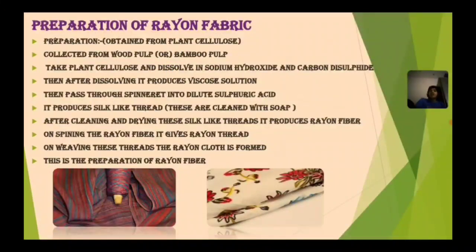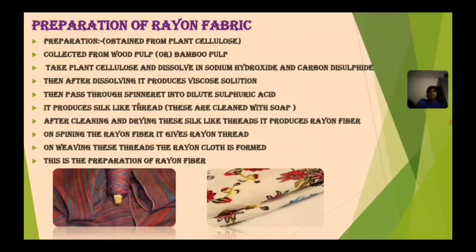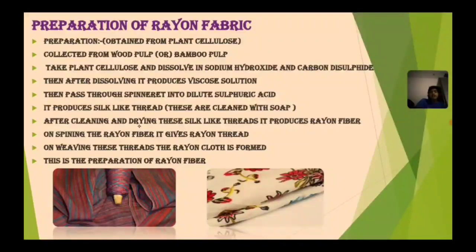Preparation of rayon fabric: it is obtained from plant cellulose, collected from wood pulp or bamboo pulp. Take plant cellulose and dissolve in sodium hydroxide and carbon disulfide. After dissolving, it produces a viscous solution. Pass this through a spinneret into dilute sulfuric acid, which produces silk-like threads. These are cleaned with soap, and after cleaning and drying, these silk-like threads produce rayon fiber. On spinning the rayon fiber, it gives rayon thread, and on weaving these threads, rayon cloth is formed.